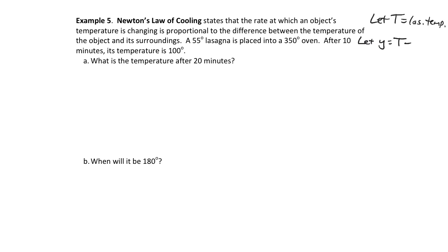You might ask why not 350 minus T — we could, but it would introduce a negative we'd have to account for. In general, it's helpful to do the temperature of the object minus the temperature of the surroundings, regardless of whether that difference is positive or negative.